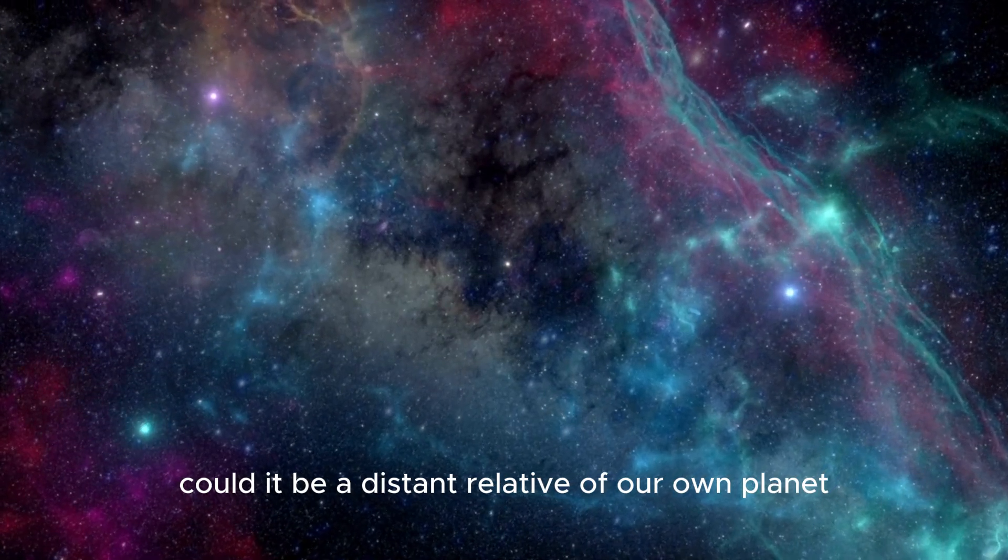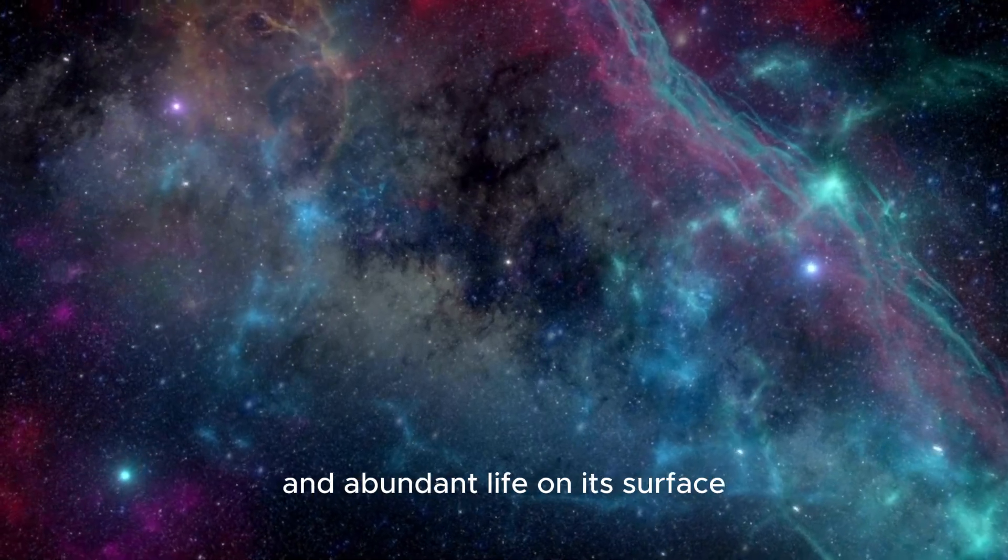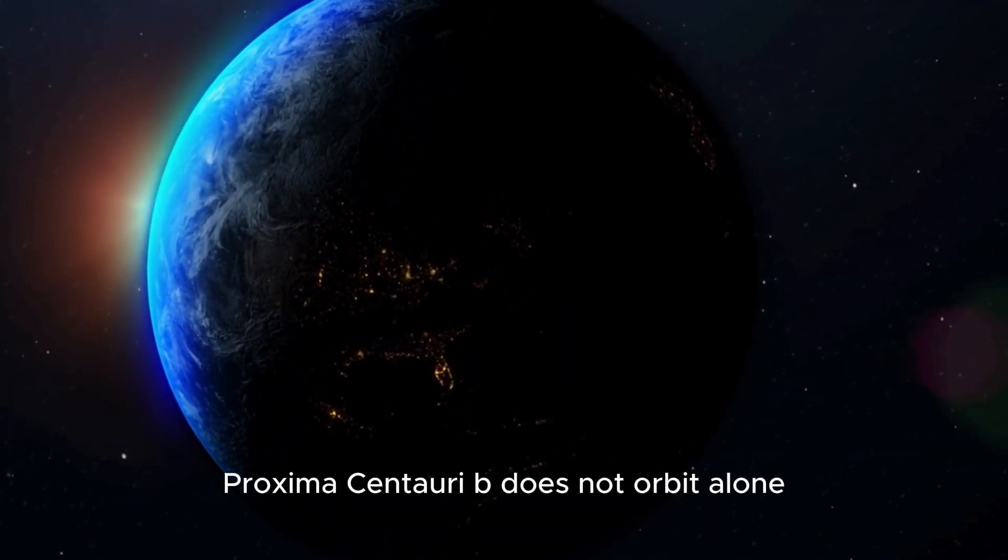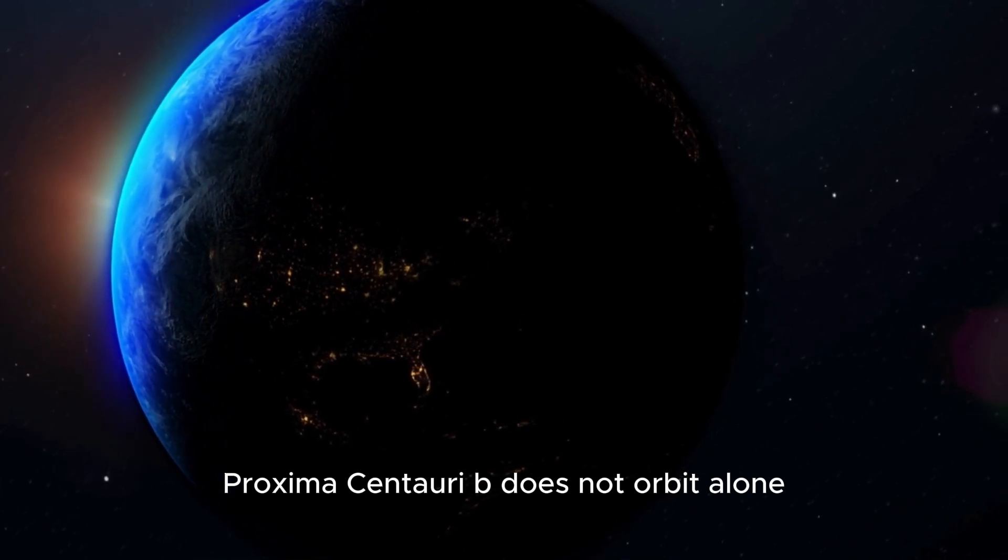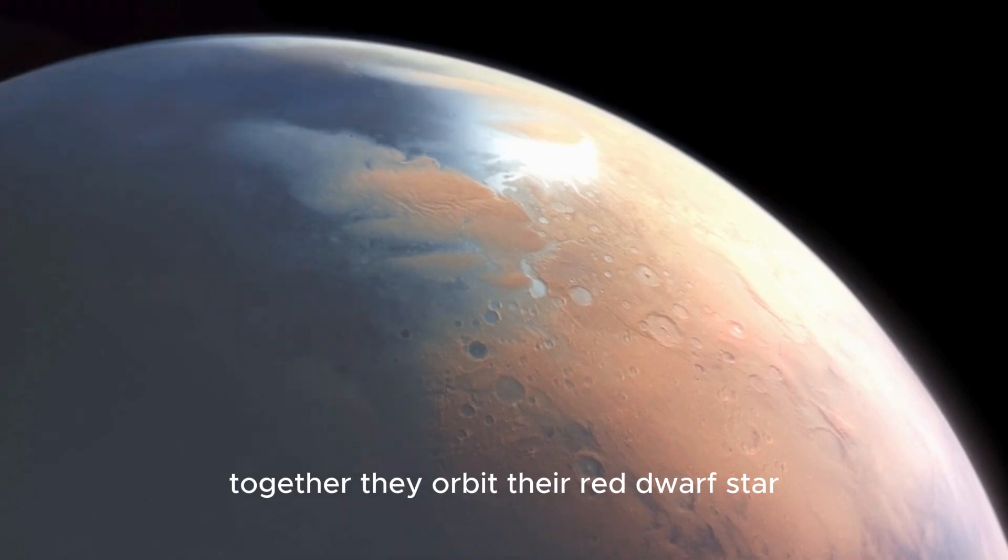Could it be a distant relative of our own planet, possibly harboring oceans and abundant life on its surface? Adding to the fascination, Proxima Centauri b does not orbit alone. It shares its celestial path with a super-Earth known as Proxima Centauri c.